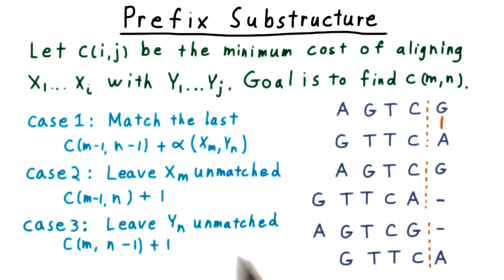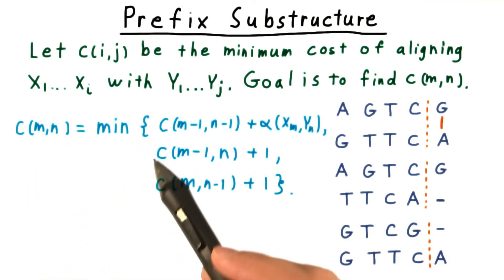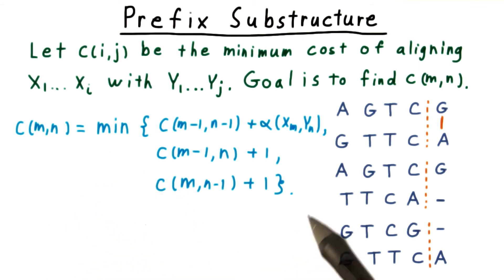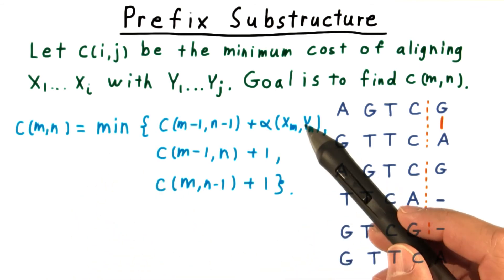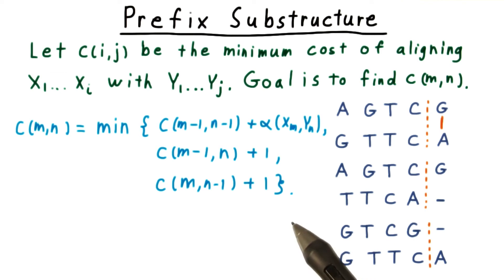And the case where we leave y sub n unmatched is analogous. Of course, C(m,n) is defined to be the minimum cost of aligning the sequences, so it must be the minimum of these three possibilities.